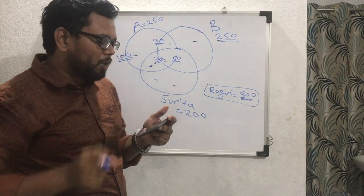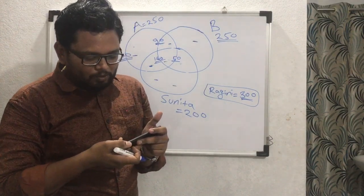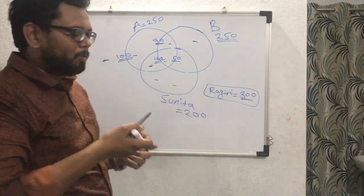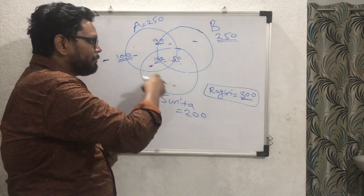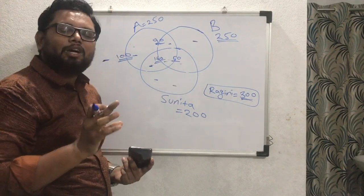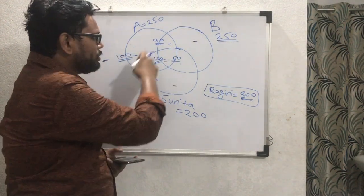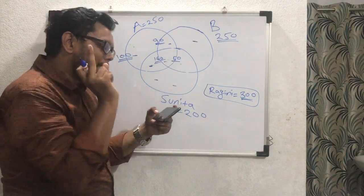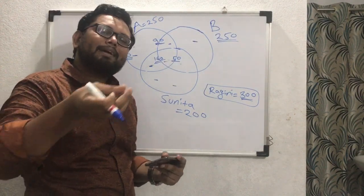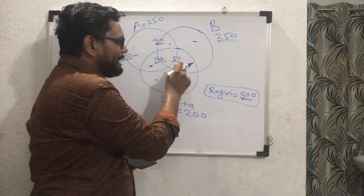The next line gives very important information: every student who preferred Sunita and supported Proposal B also supported Proposal A. This means there is no student who supports Sunita and only Proposal B. Any student supporting Sunita and Proposal B must also support Proposal A. Therefore, the region representing Sunita + B only (without A) must be 0.